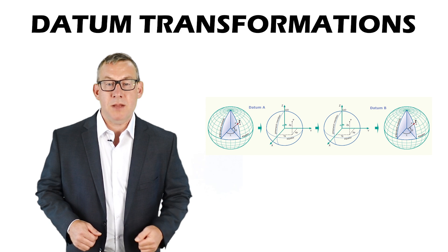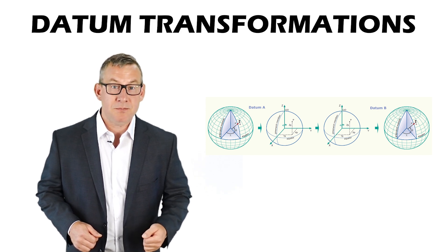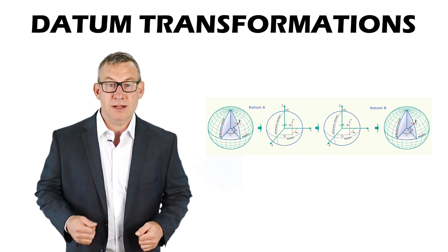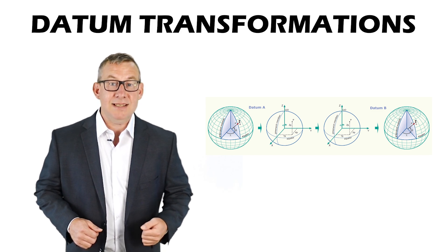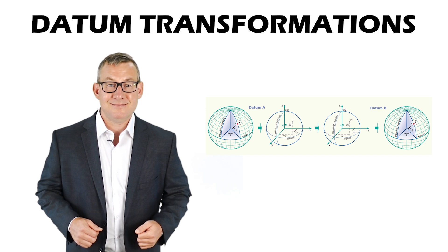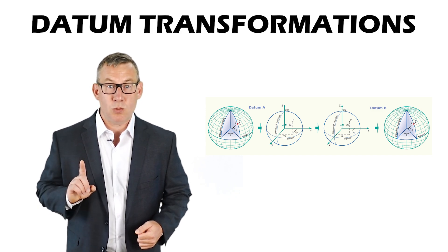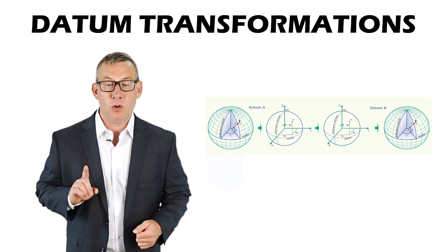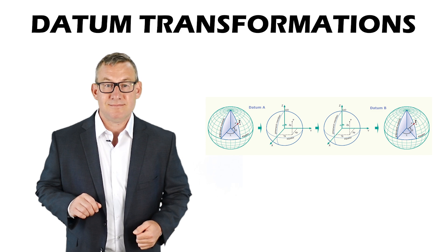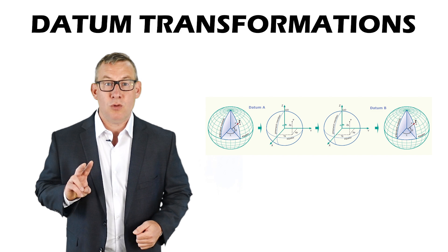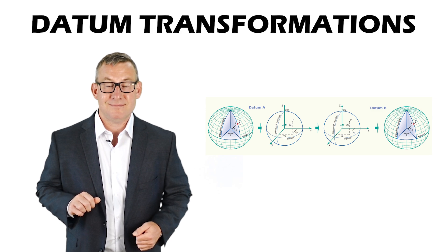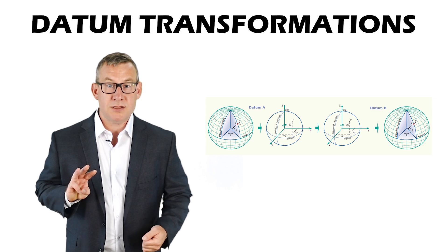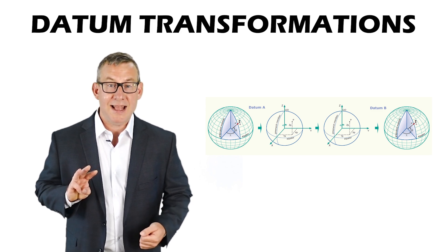A datum transformation may be part of a projection transformation process or may be used to transform between different geographic coordinate systems. It is a mathematical three-step process: first, geographic coordinates are converted from the source to Cartesian XYZ coordinates; second, an origin shift, rotation, and scale are applied to the Cartesian coordinates; third, the new Cartesian coordinates are converted to new geographic coordinates in the target datum.